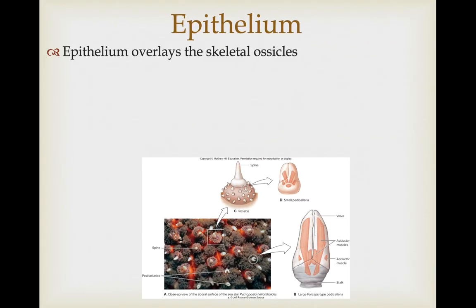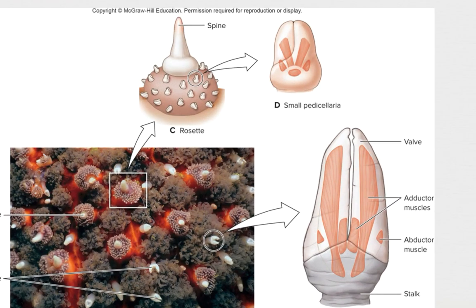They have an epithelium that overlays a skeleton of interconnected ossicles. Some have what are called pedicellaria — pincer-like structures that are products of the epithelium. These help to keep the epithelium clean of debris and ectoparasites, and also to capture prey and move it to the tube feet so it can be moved to the mouth. The epithelium also produces toxins for defense, sometimes associated with spines sticking through the skin, which are extensions of the ossicles.